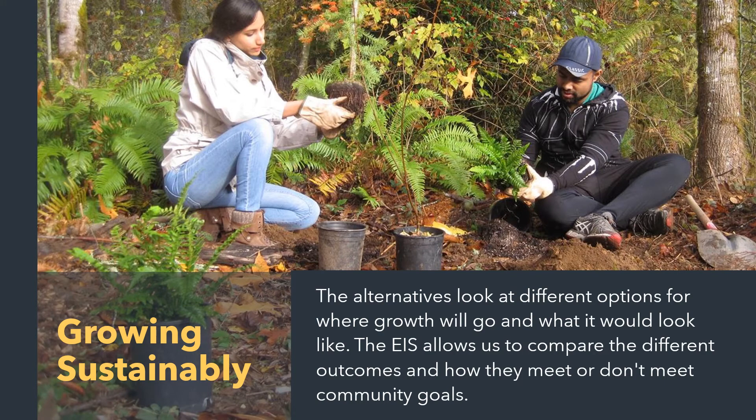The EIS tests how much and where we would grow if we don't make any changes, and compares this with two growth alternatives. Alternatives test different ways of achieving objectives. Our objectives are creating a comprehensive plan that meets state and regional requirements to accommodate our expected share of growth, and advancing equity and inclusion, sustainability, and resilience. The EIS compares these growth alternatives to test how they meet or don't meet our goals.